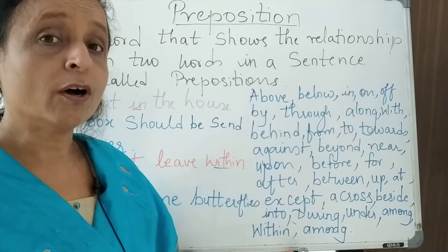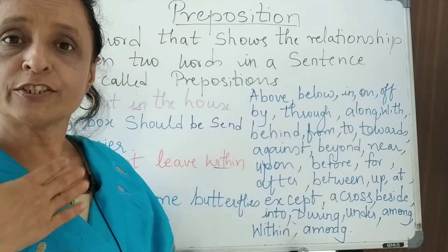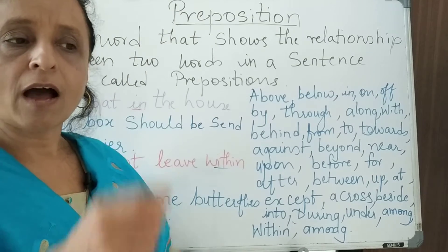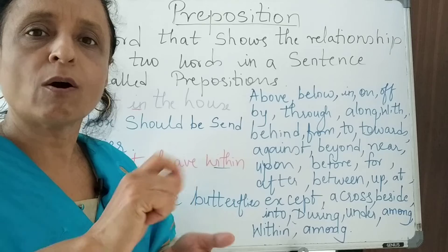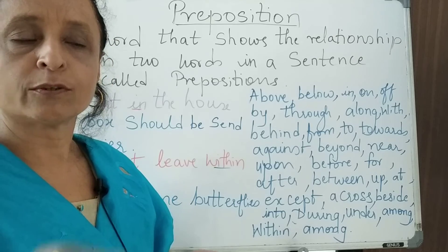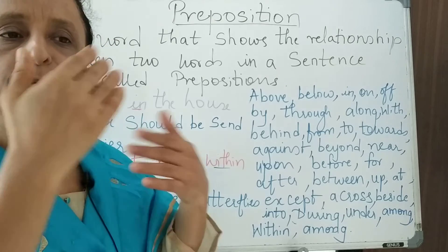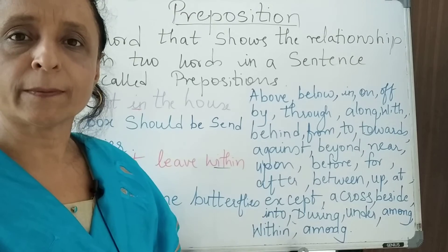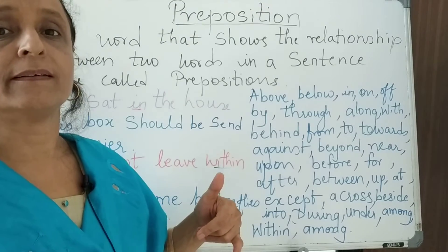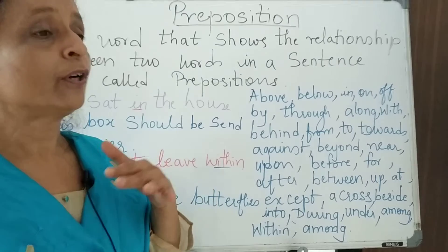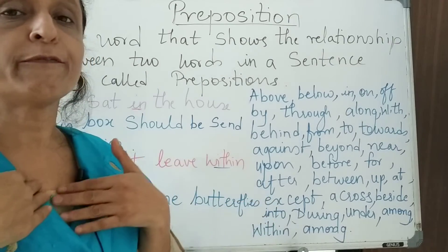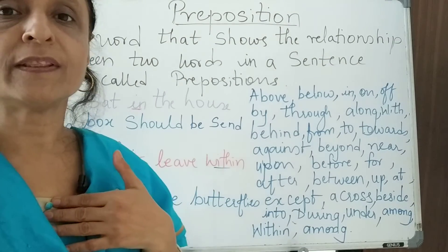So 'on' shows the relationship of me and the chair. I am writing on the table — that shows my relationship with the table. I am sleeping in the bed, so that 'in' shows the relationship of myself with the bed.